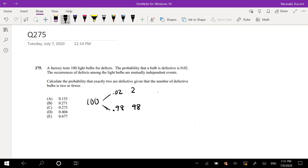So we're looking for the probability that 2 are defective, given the number of defective bulbs is less than 2. Or it's 2 or fewer, so less than or equal to 2.